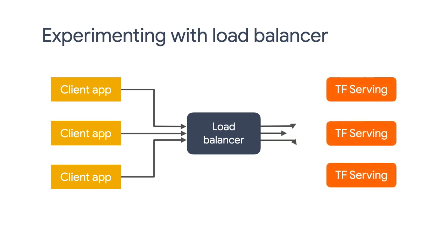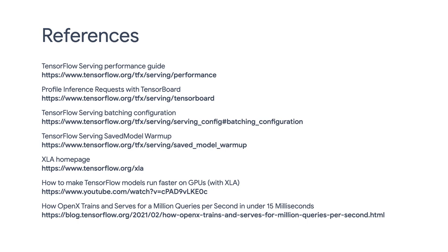One last tip: in real-world production systems, we often have a number of TF Serving servers behind a load balancer, so you should make sure to tune the parameters in a similar environment instead of on a single instance of TF Serving. This will help ensure the tuned setup is applicable to your production system. If you want to learn about setting TF Serving behind a load balancer or a proxy, please check out the colab for image classification with TF Serving, where we set up an Envoy proxy with a round-robin load balancer. To summarize, today we discussed quite a few ways to improve TF Serving performance. There's no silver bullet, and your mileage will vary, so experiment with different settings. In the next episode, we will discuss advanced features in TF Serving, such as serving JAX models.